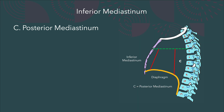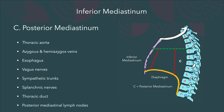Coming to the posterior mediastinum — located just behind the heart and its coverings. The structures here are: thoracic aorta, azygous vein, hemiazygous and accessory hemiazygous veins, esophagus, vagus nerve, sympathetic trunks, splanchnic nerves, thoracic duct, and posterior mediastinal lymph nodes. These are the structures present in my posterior mediastinum.